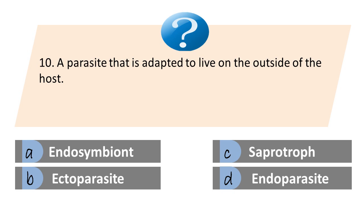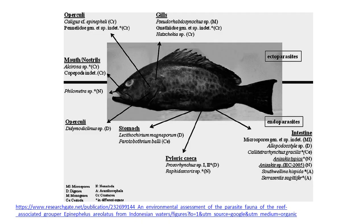Last question: A parasite that is adapted to live on the outside of the host. A. Endosymbiont. B. Ectoparasite. C. Saprotroph. D. Endoparasite. The answer is B. Ectoparasite. Examples of ectoparasites live outside of the host organism — for example, Caligus, which is found attached to the skin or outside of a fish. Endoparasites live within the organism, such as Anisakis found in the intestine.